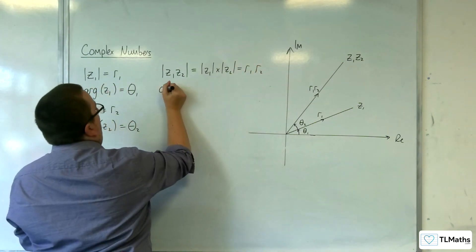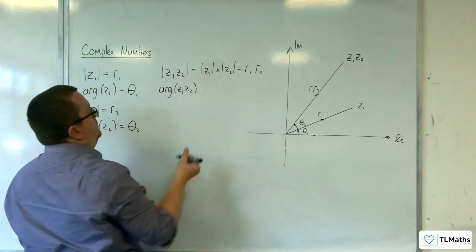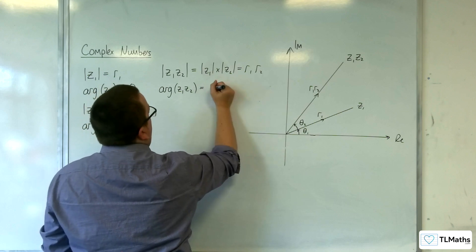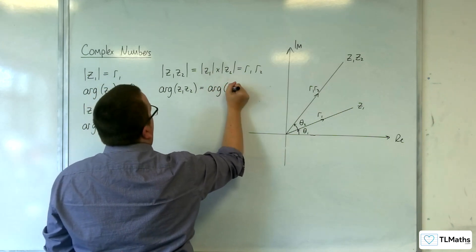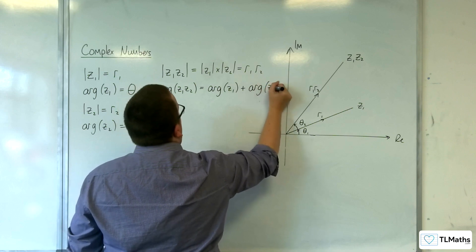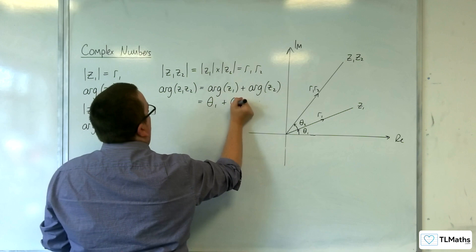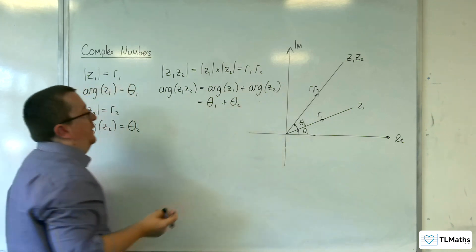And the argument of Z1 Z2 is equal to the argument of Z1 plus the argument of Z2, which is theta 1 plus theta 2 in this case.